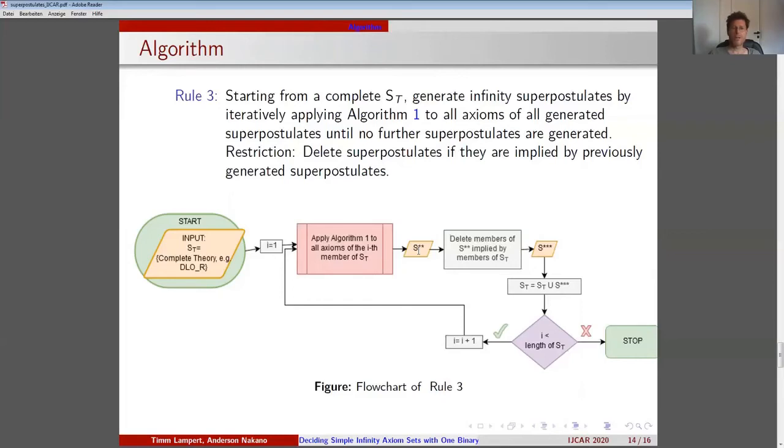We generate a set S' of superpostulates by starting with a given complete theory such as DLOR and set the running variable i to 1. Then apply Algorithm 1 to all axioms of the i-th member of S'. The result is S''. Delete members of S'' implied by members of S'. The result is S'''.